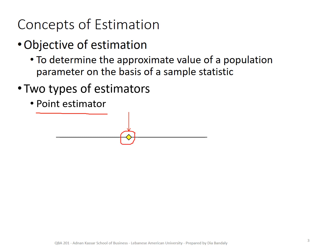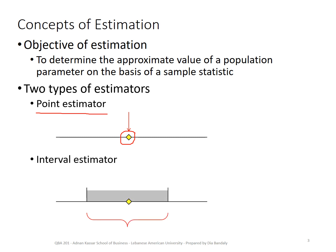With a point estimator, we're saying that this single value is what we estimate. The other type is the interval estimator, where we say the value we're trying to estimate lies within a certain interval. What we're going to learn in this topic is how to find the boundaries of this interval — the lower level and the upper level. We'll use the sample mean to do that, but it's not as simple as setting x-bar equal to mu. We're going to use our knowledge of the sampling distribution of x-bar to set this interval.